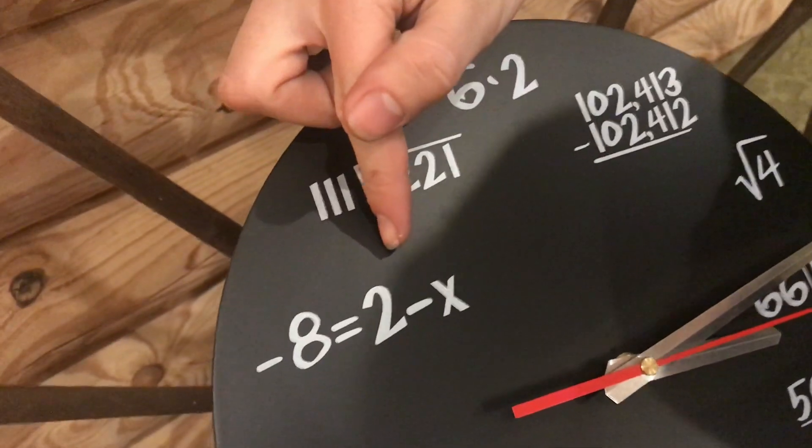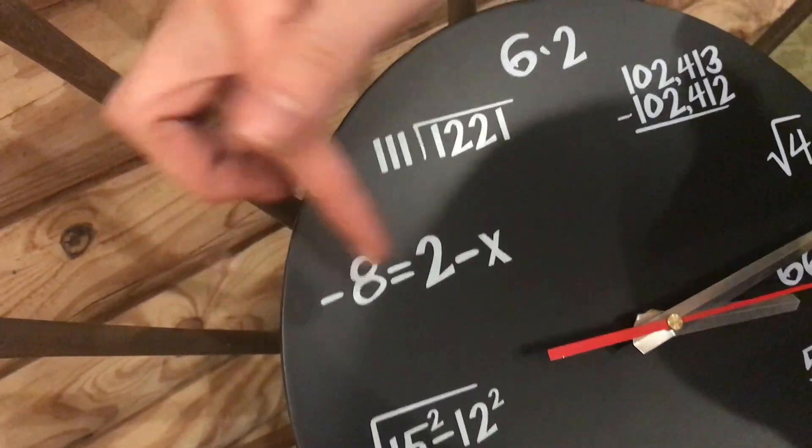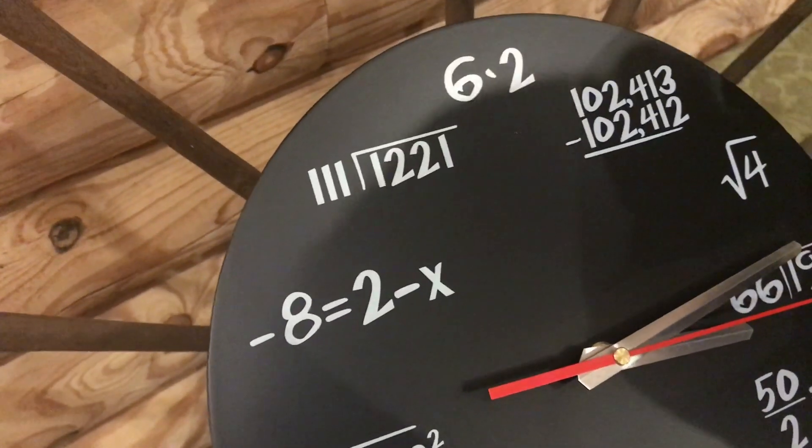This is another equation. It's a lot simpler. You would just have to add x over to the one side, and then add 8 to the other, and you get 10.